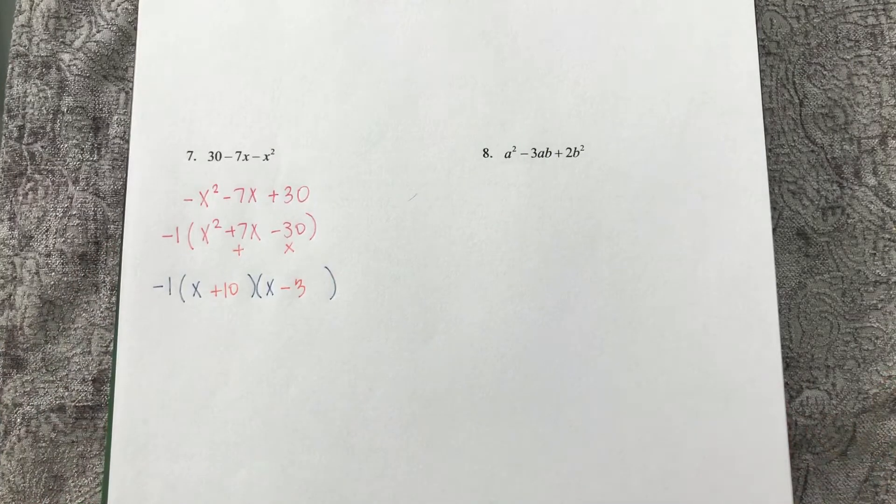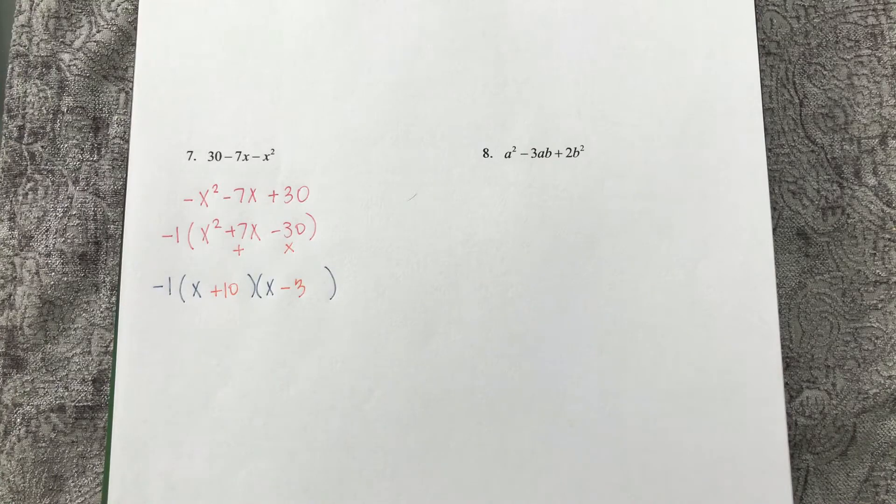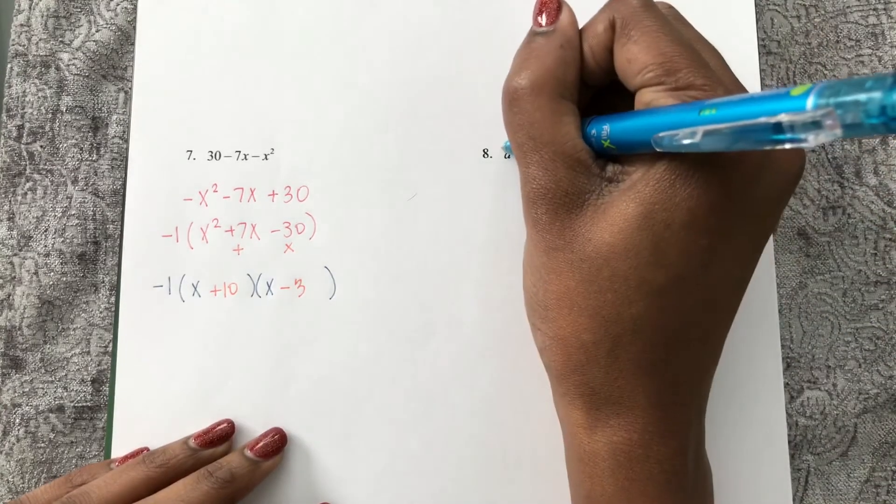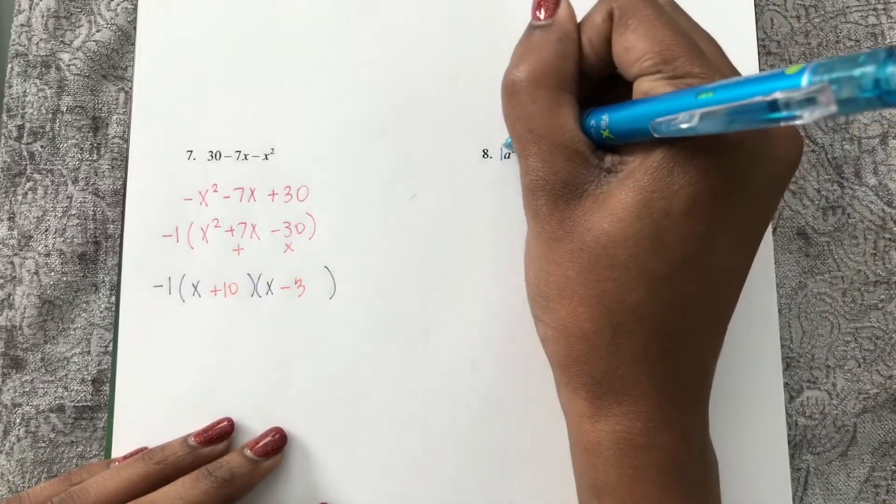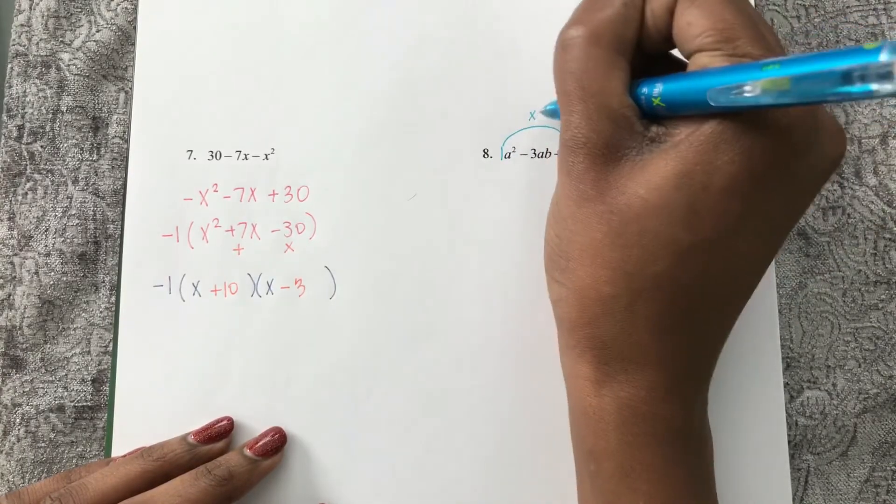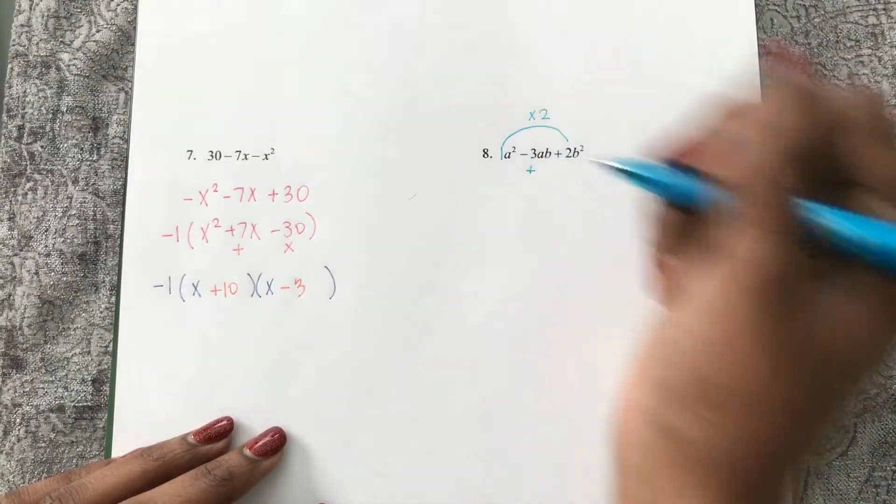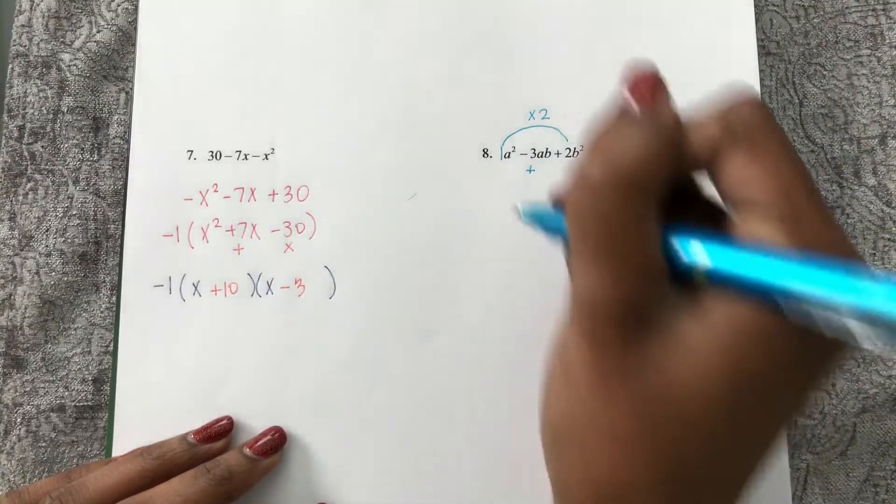Now, number 8 is a little different, but it still is the same factoring pattern. I'm going to do the a times c split by b just to show you how this pattern works. So here my coefficient is 1. 1 times 2, we're looking for two numbers that multiply to make 2 and add to make negative 3.